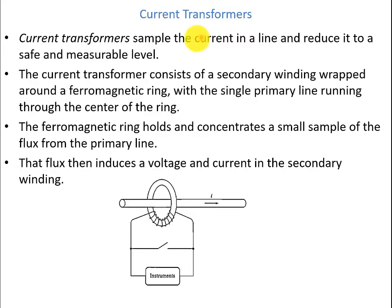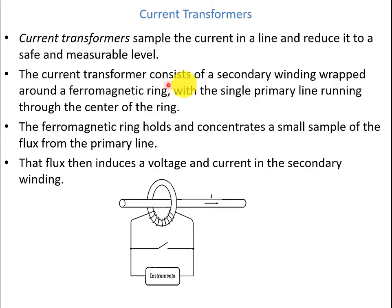Current transformers are transformers that sample the current in a line and reduce it to a safe and measurable level. The current transformer consists of a secondary winding wrapped around a ferromagnetic ring and a single primary line running through the center of the ring. The ferromagnetic ring holds and concentrates a small sample of the flux from the primary line.